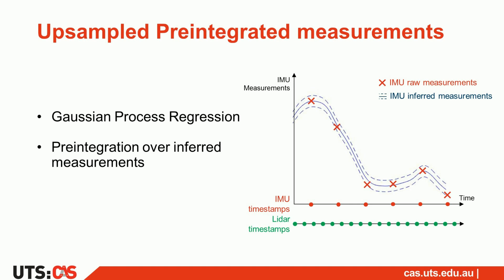These measurements use the pre-integration principle over upsampled inertial measurements. We use Gaussian process regression to interpolate the raw IMU readings at any time of interest. These measurements can be used to easily work with asynchronous sensors without making assumptions on the motion of the system.